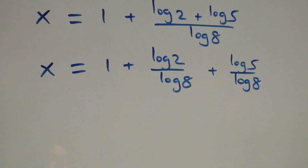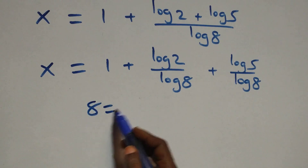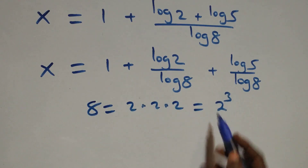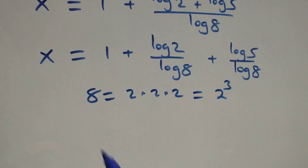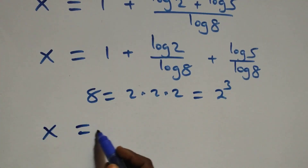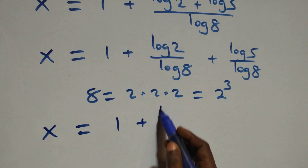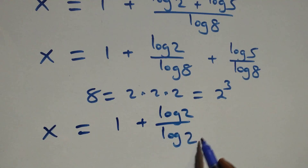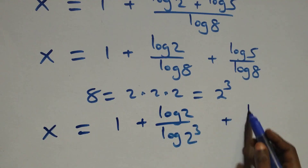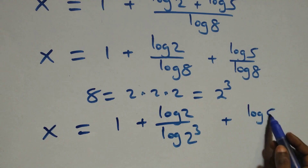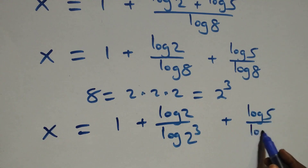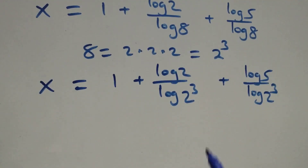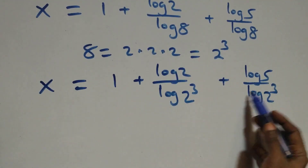Then here we can write 8 as 2 times 2 times 2, which is the same thing as 2 cubed. What we have becomes x = 1 + log2/log(2³) + log5/log(2³). We apply the power of log rule where 3 comes out in front.